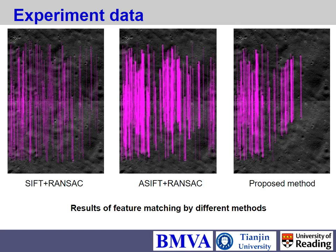When we applied standard SIFT with RANSAC, we got very few matching points. When we applied ASIFT with RANSAC, we got many matching points — but too many, meaning there were many incorrect matches included. Therefore, we applied the improved RANSAC, which further refined the matching points. The proposed method's result shows that outliers are excluded, and the remaining points can be used for the final registration and reconstruction.